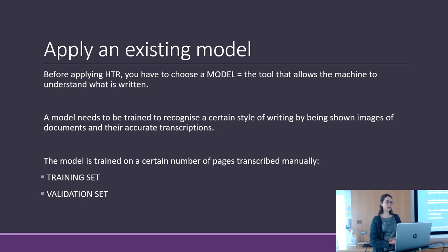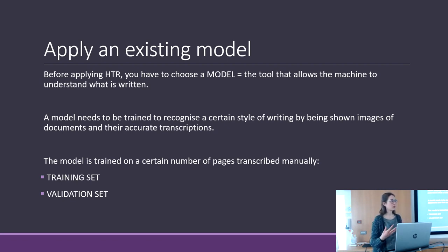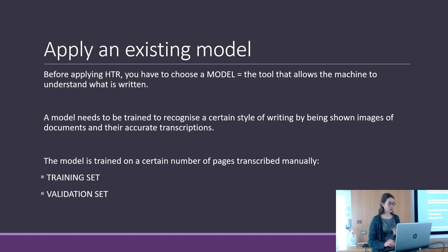We need a model trained to recognize a certain style of writing. We show images of documents and attach transcriptions to the machine. The machine learns and tries to do the same job — tries to transcribe the documents by itself.